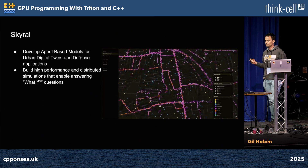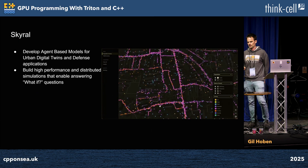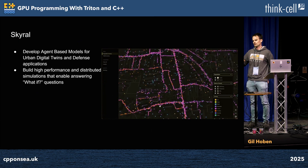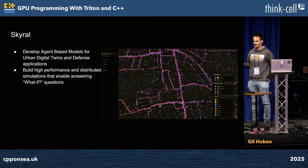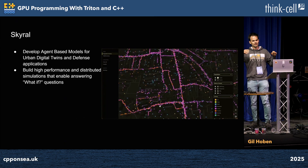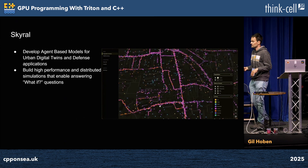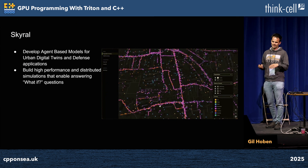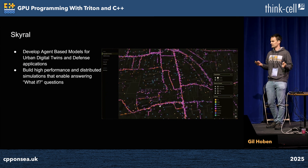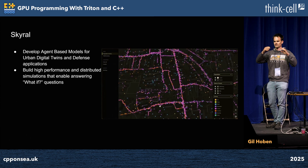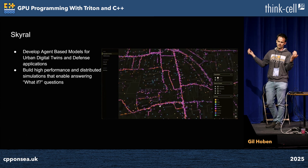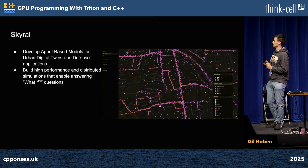What we do is develop agent-based models and use them in digital twins and defense applications. We compose these models together and build high-performance distributed simulations. The idea is that we're able to answer what-if questions — for example, if you close a road, what is the impact on the population? What are the ways around it?